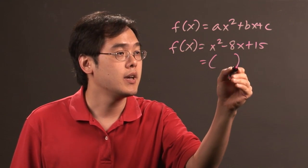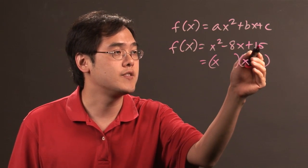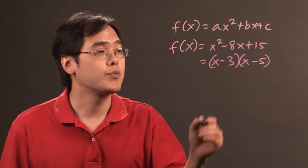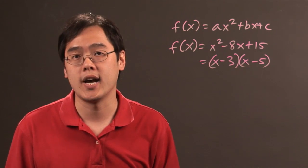So actually in this case it is. You have x squared breaks down to x and x, and then factors of 15 that add to give you negative 8 is actually negative 3 and negative 5. So you have a product of two linear functions because x minus 3 and x minus 5 are both linear.